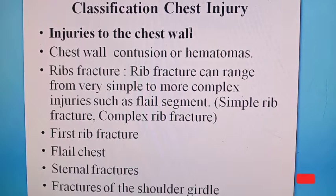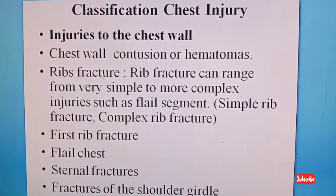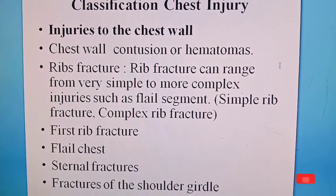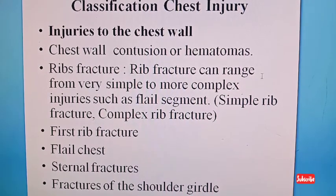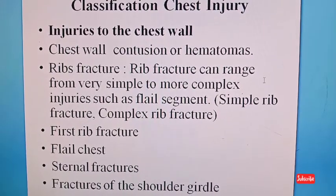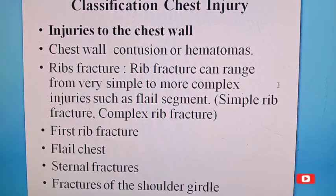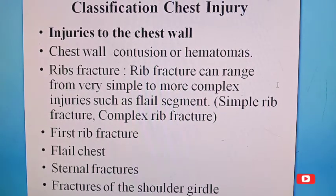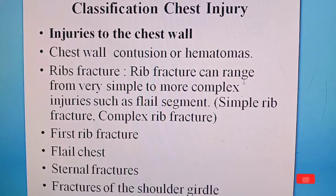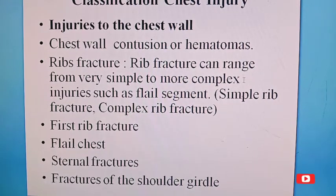The classification of chest injuries: injuries to the chest wall include chest wall contusions or hematomas, rib fractures — which can range from simple to more complex injuries such as flail segment or flail chest — simple rib fracture, complex rib fracture, first rib fracture, sternal fracture, and fractures of the shoulder girdle.